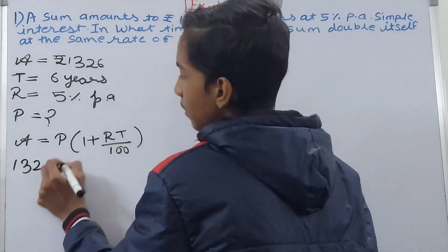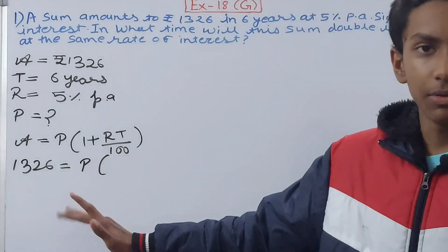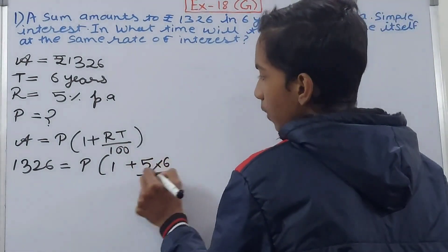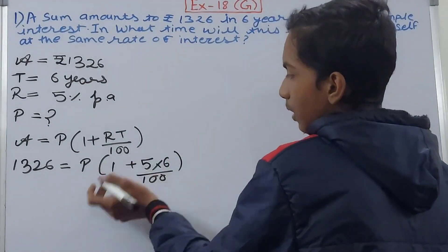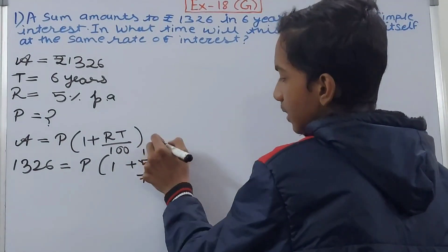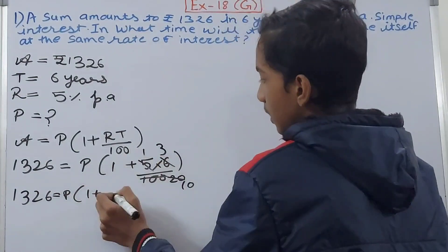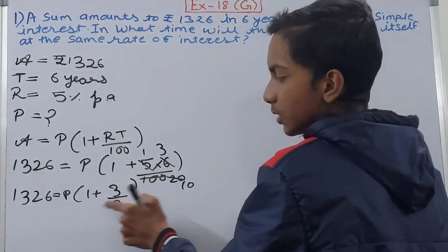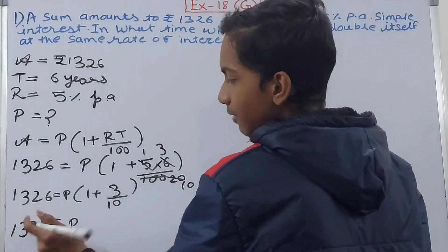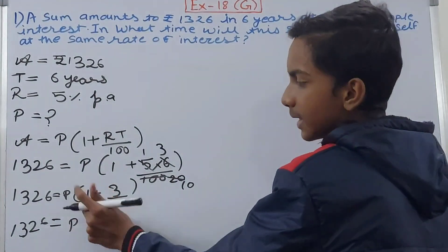Now substitute the values. The amount is 1326, the principal P is unknown so we keep it as a variable. Then: 1326 = P × (1 + 5×6/100). We cancel 5 and 100 to get 20, then 6 and 20 cancel to give 3 and 10. So we get 1326 = P × (1 + 3/10). Opening the brackets, since no sign means multiplication.